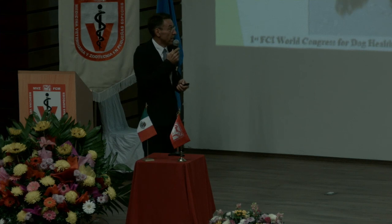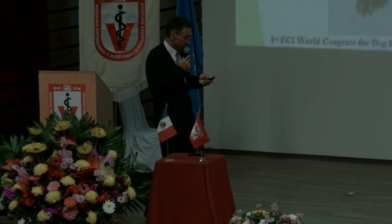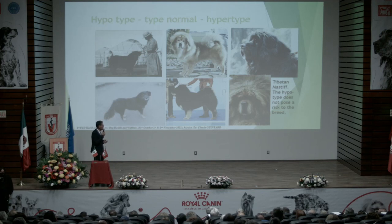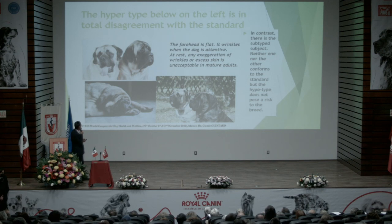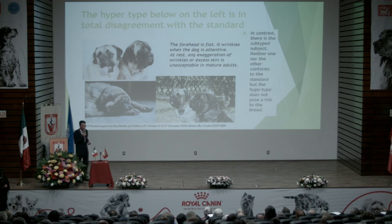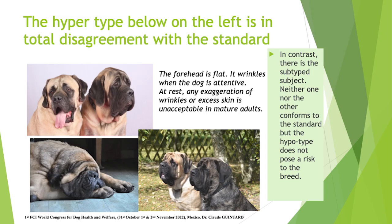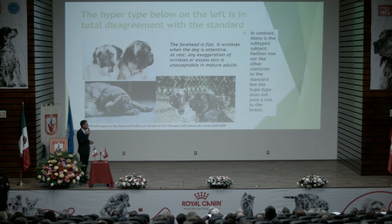And for the Tibetan Mastiff, we have animals which are considered hypertypes, but hypotype in terms of healthy animals does not pose a risk to the breed. But these hypertypical animals do pose a risk. You can see here the contrast: hypertypical dogs on one side, and on the other, hypotype animals — but again, hypotype animals do not pose a risk to the breed.